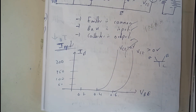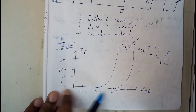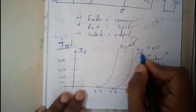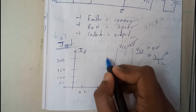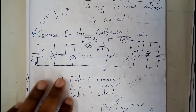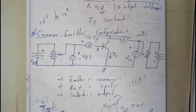For most cases, the input characteristics is almost similar to a normal PN diode transistor. In the previous common base case, if we increase the current on the output side we used to get it on the left side, but here we get it on the right side. That's the main difference between common base and common emitter. Common collector will have a completely different graph.